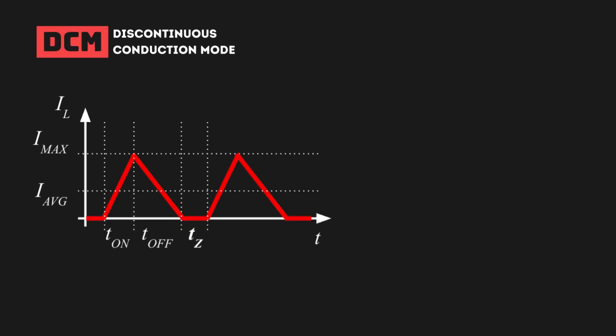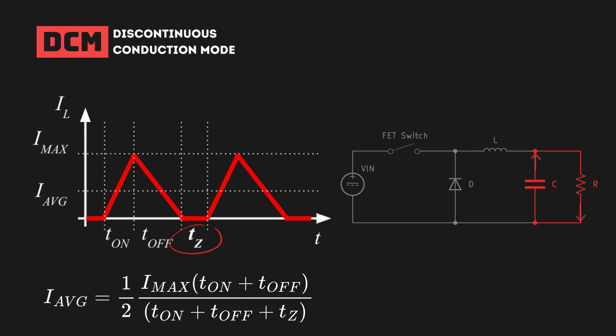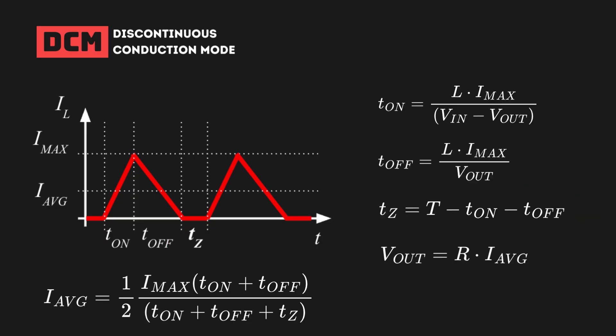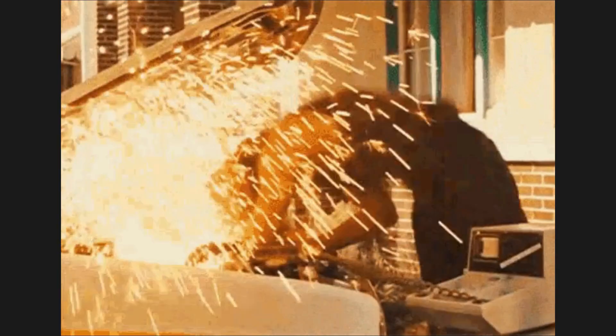This happens because the average current supplied to the load now depends also on a third switching phase, when no energy is provided by the inductor. The length of this phase depends on other variables, which increases the complexity of the equation. Now, bucks can save your life, but just if you know how to use them.